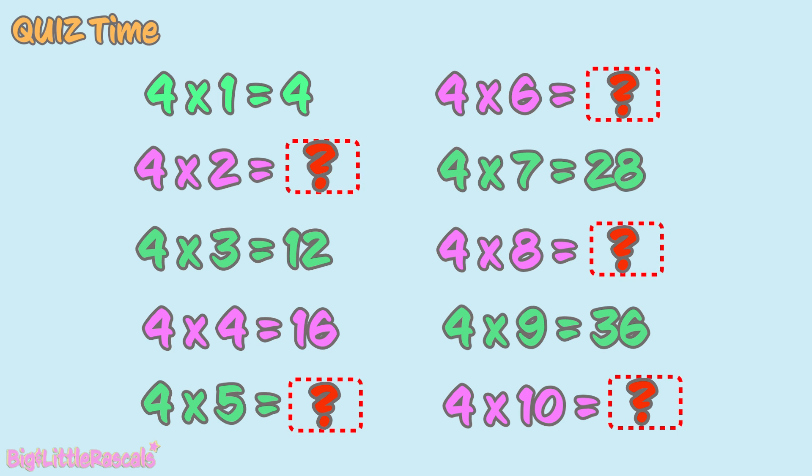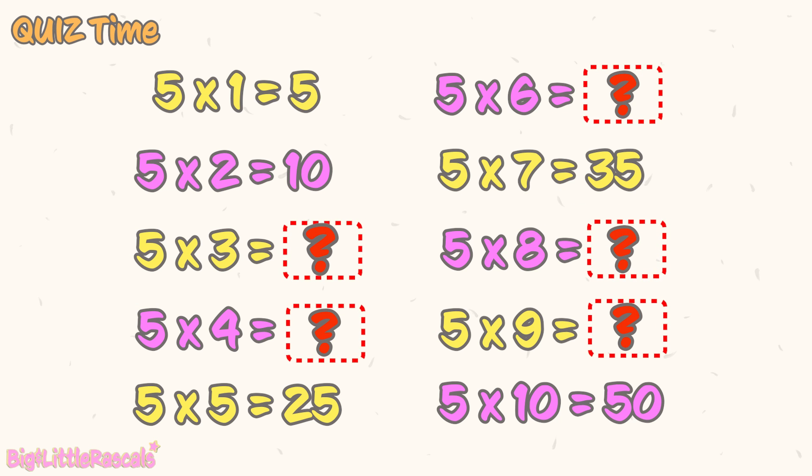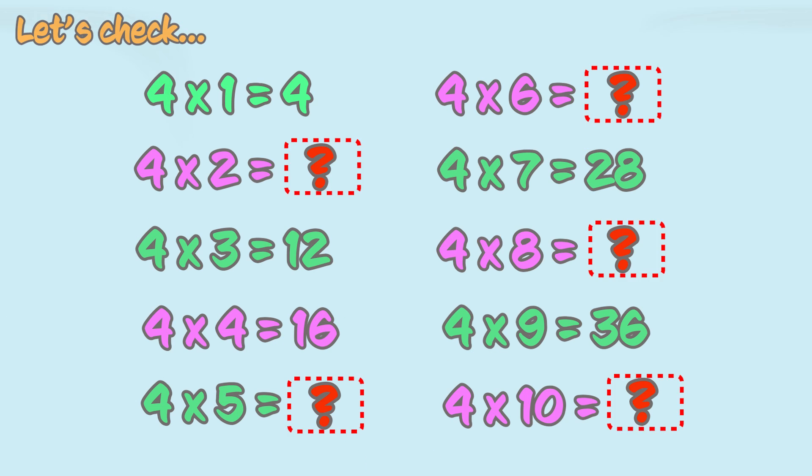Now, let's challenge ourselves. Let's visit the multiplication by 4. There are empty squares that we need to tell the correct answers. Ready? Let's write down your answers on a piece of paper. Now, let's visit the multiplication by 5. There are empty squares that we need to tell the correct answers. Ready? Let's also write down your answers on a piece of paper.